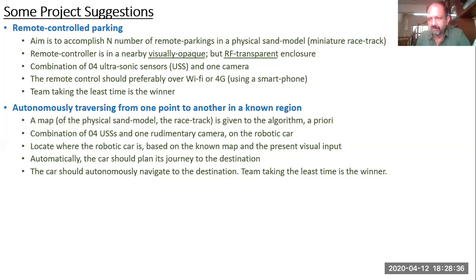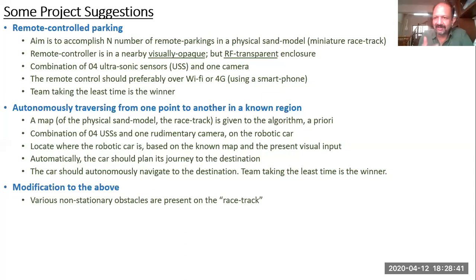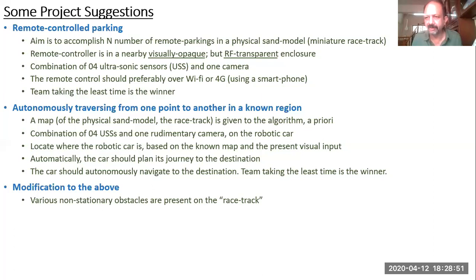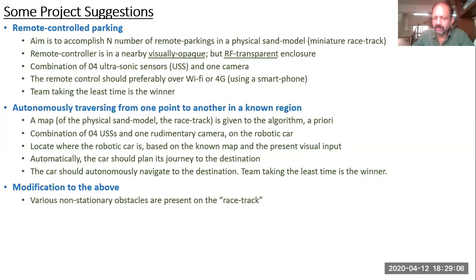A further advanced variation: the map is given, but while the car is traversing, unknown objects move dynamically in the space — representing pedestrians or other cars. The car must still navigate from its starting position to the final destination while avoiding these dynamic obstacles. Okay, so many interesting things Commander Shishir has talked about — what should be the starting point?